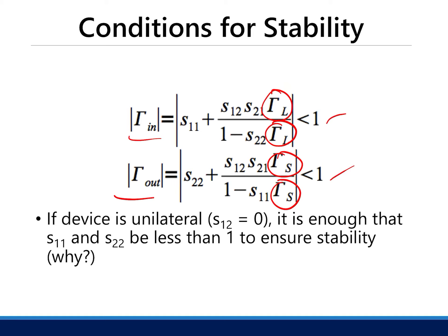If the device is unilateral — meaning S12 = 0 — then it is enough that |S11| and |S22| are less than 1 to ensure stability. If S12 = 0, then gamma_in and gamma_out depend only on S11 and S22, and those just need to be less than 1.